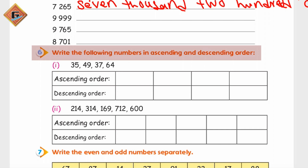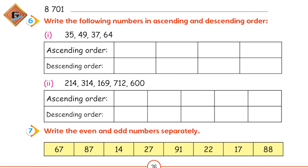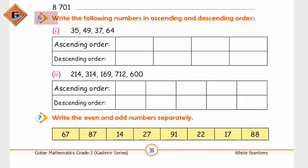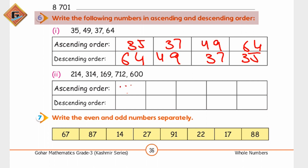Next hamare paas question hai: write the following numbers in ascending and descending order - yani ki in numbers ko hum ascending aur descending dono order mein likhna hai. Sabse pehle ascending order - yani ki chote se shuru karenge. Sabse chhota kya hai? 35, usse bada 37, 49, and 64. Ab descending mein: highest 64, then 49, 37, and 35. Smallest number jo hamare paas aa raha hai is mein - 169.